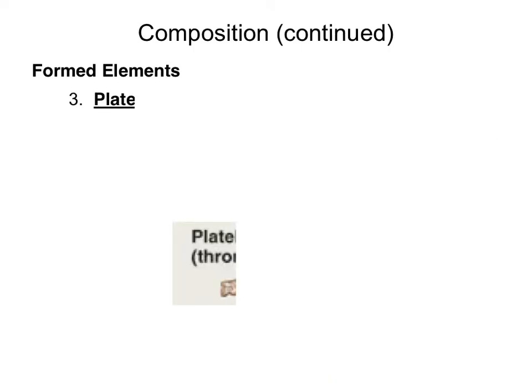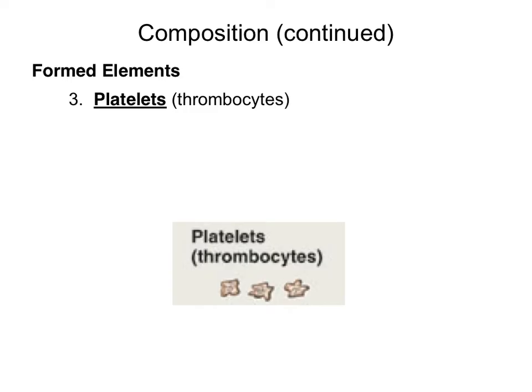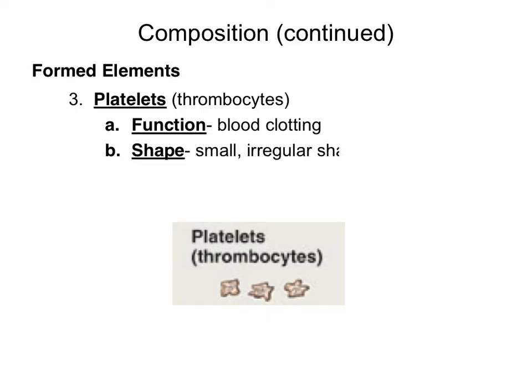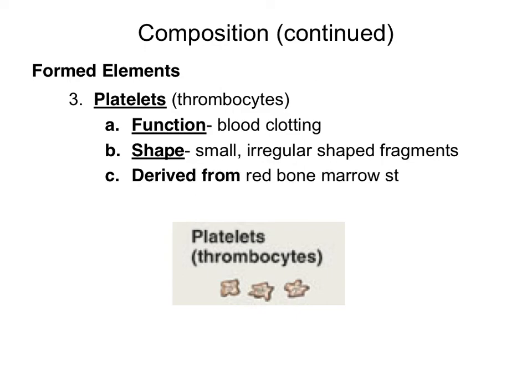The last formed element are platelets, or thrombocytes. The function of a platelet is to aid in the clotting of blood. Their shape consists of tiny, small, irregular shaped fragments that look like bits and pieces of cells. Just like the other two formed elements, platelets are derived from red bone marrow stem cells.